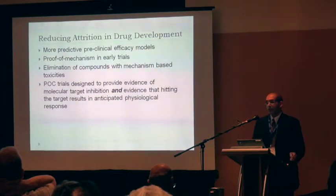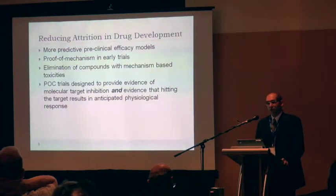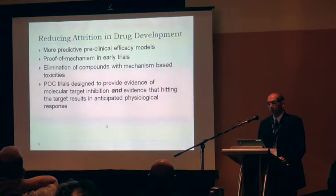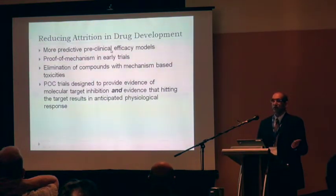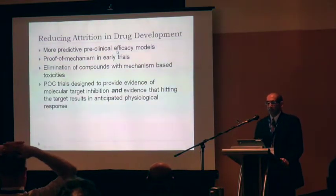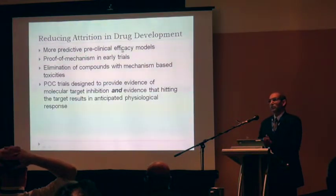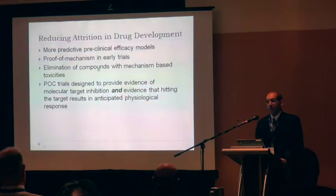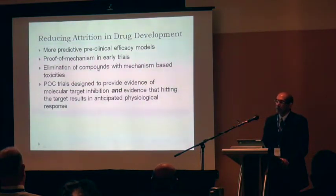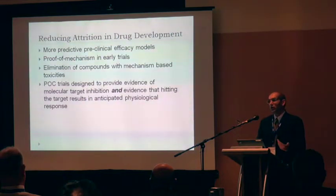What are the ways people have thought about to address this attrition? Some may be obvious — having more predictive preclinical efficacy models. From a clinical perspective, we tend to think you can just snap your fingers and have a better efficacy model for lung cancer, but obviously that's not the case. One approach is to get better compounds into phase one so you have better compounds going through phase three. Another is to identify and improve proof of mechanism in early trials.